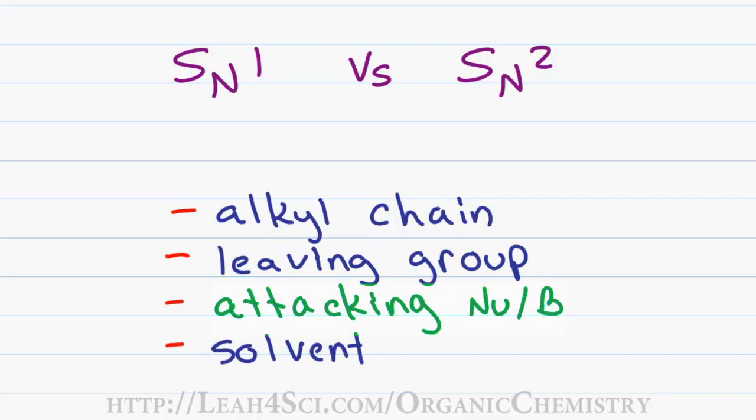The attacking group in a substitution reaction will be a nucleophile rather than a base. An SN2 reaction takes place when you have a strong or negative nucleophile. An SN1 reaction tends to happen with a weaker or neutral nucleophile.